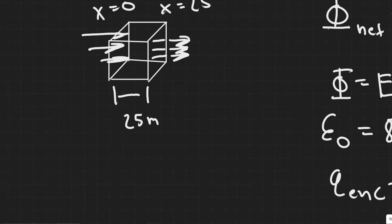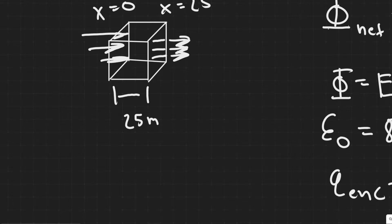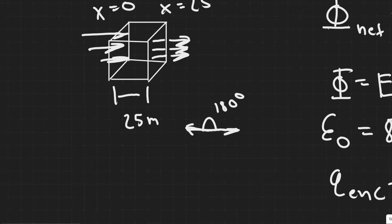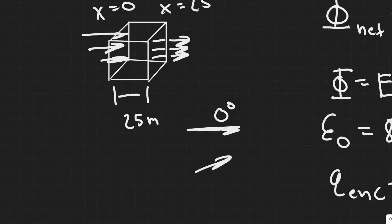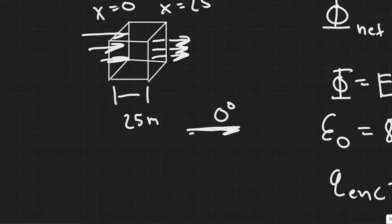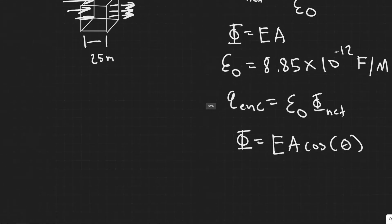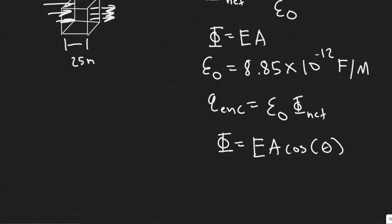If the field is entering one face, the outward normal to that surface points opposite to it, so those two vectors are 180 degrees apart. If the field and the normal were right on top of each other, the angle between them would be zero. This theta is what determines the sign of the flux for each face.